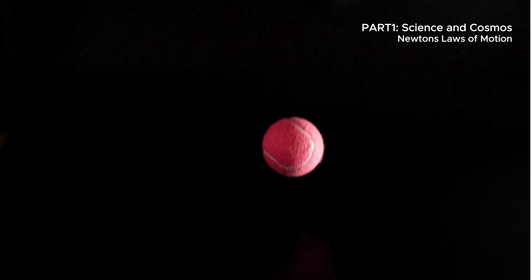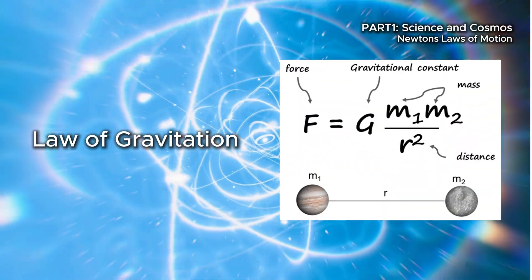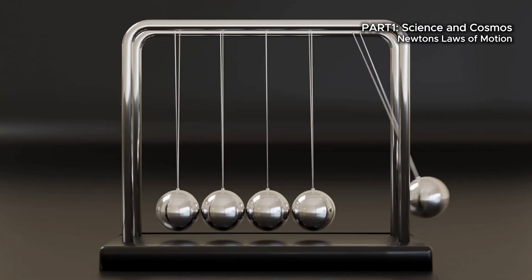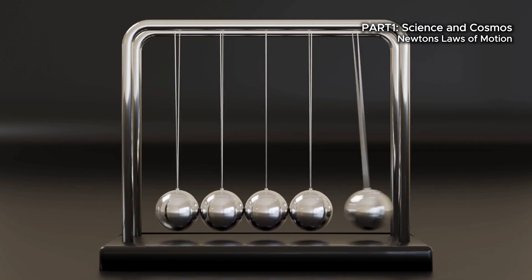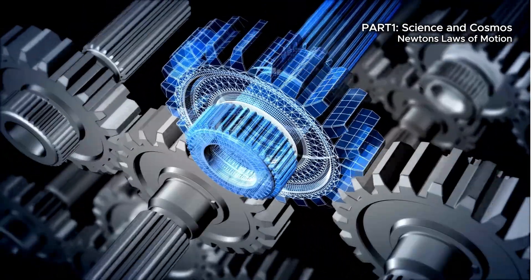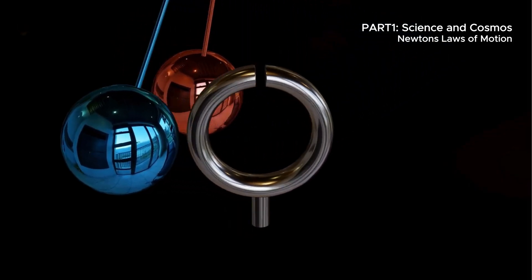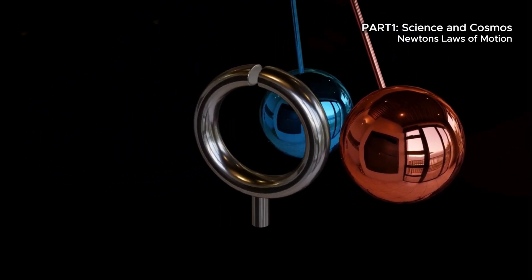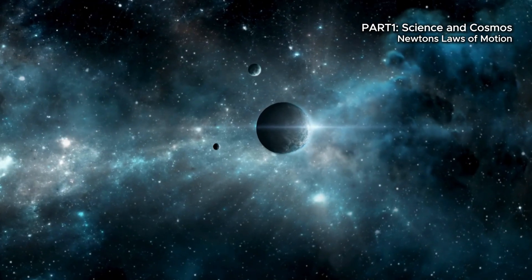It gave us the tools to define motion itself. Newton's three laws of motion emerged alongside his law of gravitation, describing how objects move, interact, and respond to forces. For the first time in human history, we could not only observe motion, we could calculate it, measure it, and predict it. From cannonballs to comets, from pendulums to planets, everything followed the same principles. It unified the heavens and Earth under one law, revolutionizing physics, engineering, and astronomy for centuries to come.